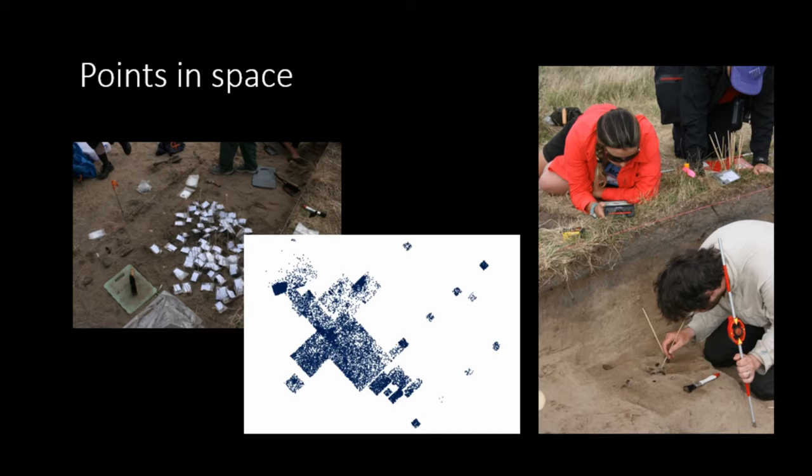So what we do is we record every object over two centimeters in size with a total station. When possible, which is difficult with the sand deposits and our working conditions, we record the maximum axis of stone artifacts for dip and strike. And what we get is a very high density of archaeological material or of data. What you see there is representative of over 25,000 points. I apologize, I did not put a scale on, but we're looking at about 10 meters across here. So very high densities of artifacts.